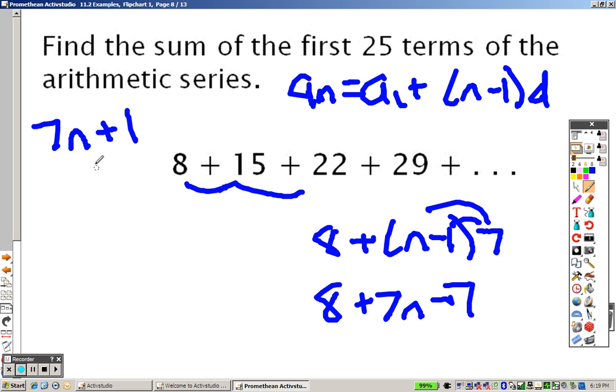So to find the 25th term, I need to plug a 25 in there. So 7 times 25 minus 1, or sorry, 7 times 25 plus 1, you get 176. So remember that, 176.